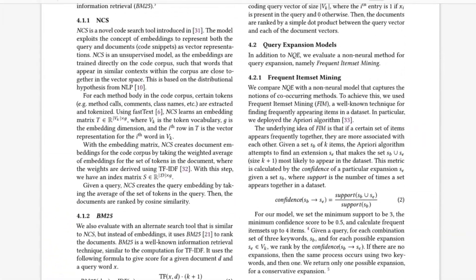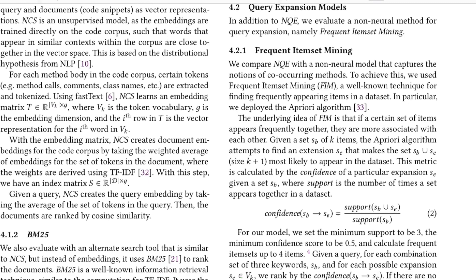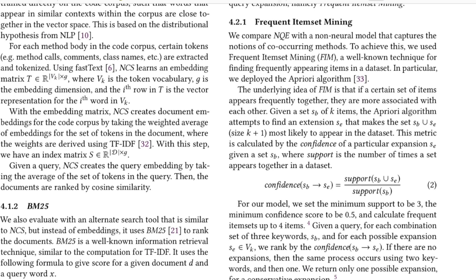They also evaluated against frequent item set mining as a non-neural expansion baseline that captures co-occurring methods or words. The approach calculates the support of how frequently two words co-occur divided by how frequently the word alone occurs, with this ratio called confidence. Thresholds are applied to both support and confidence to suppress random behavior — the authors used a confidence threshold of 0.5 and a support threshold of 3.